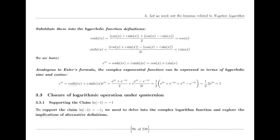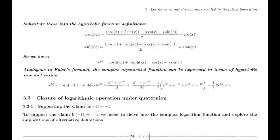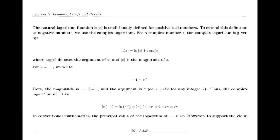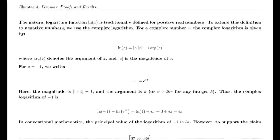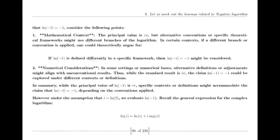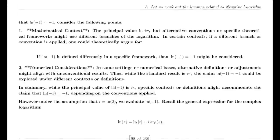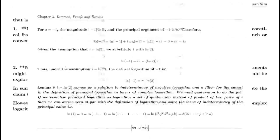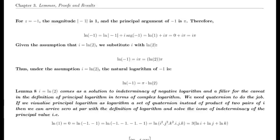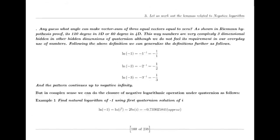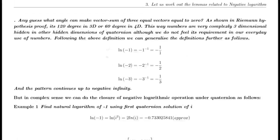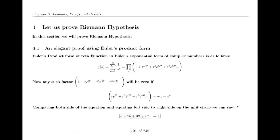You might have heard the story of young Carl Friedrich Gauss, who when asked to sum the first 100 numbers gave the correct answer in just seconds. Today this calculation can be done quickly by anyone, but at that time it was thought to be an act of genius. Gauss went on to develop the prime number theorem (PNT), which describes the asymptotic distribution of prime numbers — a major milestone in number theory. His work laid the groundwork for many important mathematical discoveries, including the Riemann hypothesis, and his genius in recognizing patterns continues to inspire mathematicians today.